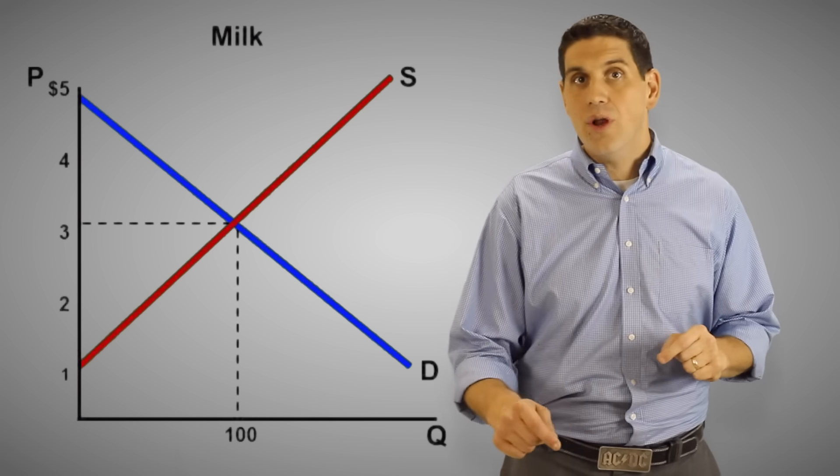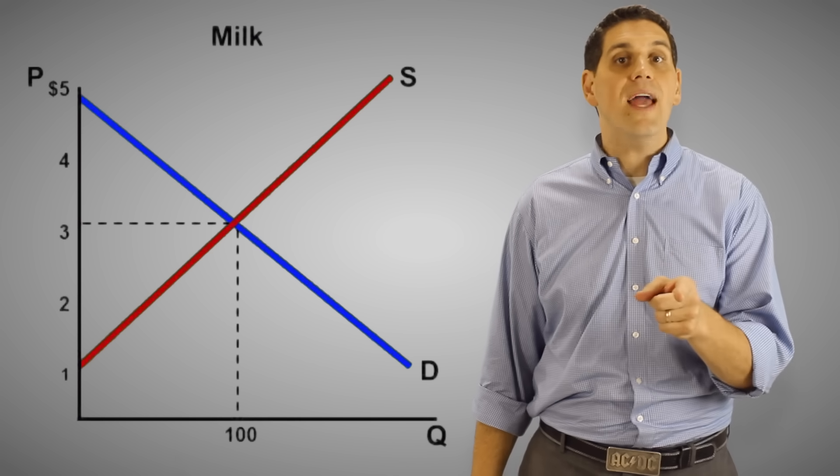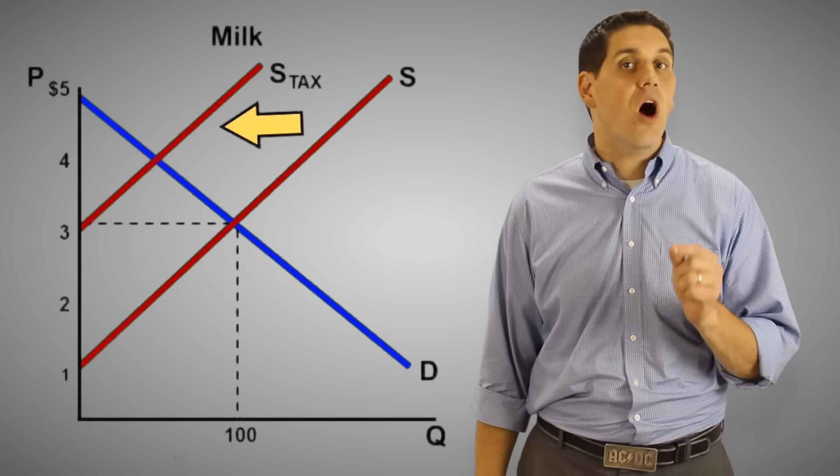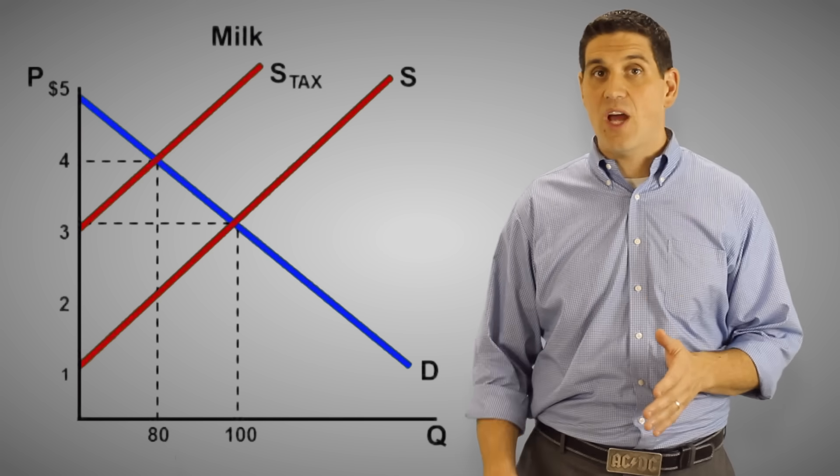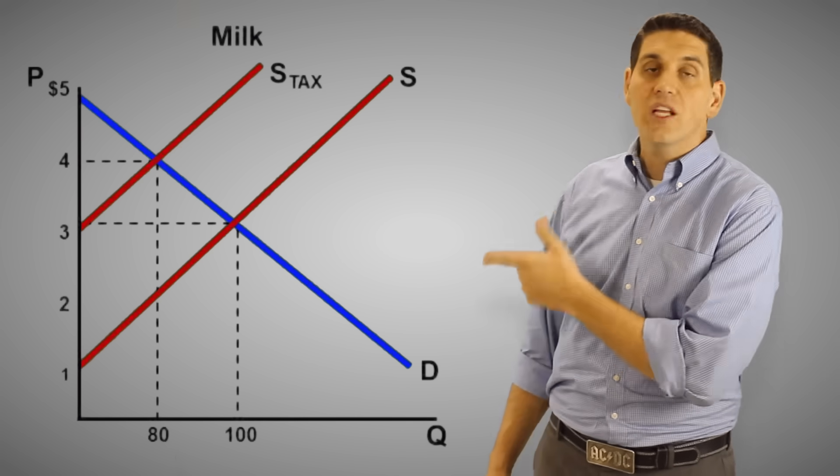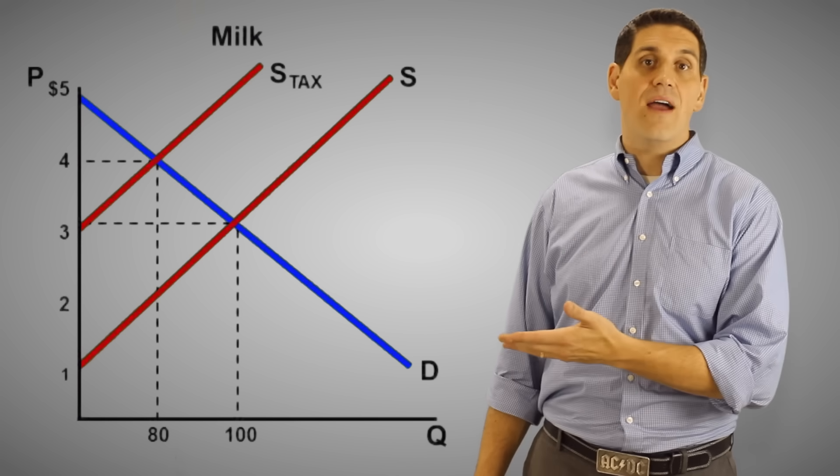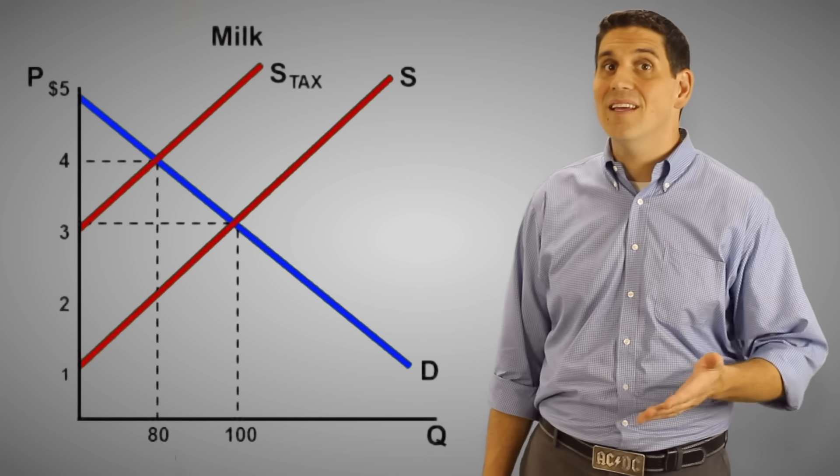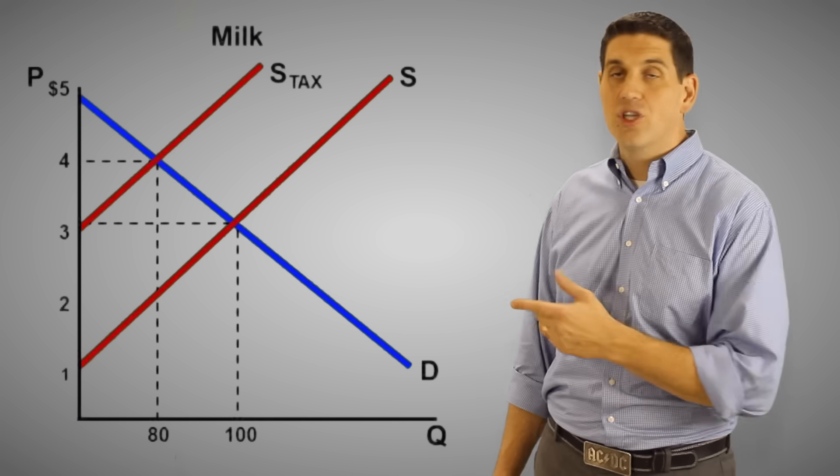We've got the supply and demand for milk and the equilibrium is right here at $3. If the government put a per unit excise tax on milk of $2 per unit, that would cause the supply curve to shift to the left. The price that consumers pay is now $4. But I want you to notice the price didn't go up to $5. It was a $2 tax and the price before was $3, but the new price isn't $5. That's because the consumers and the producers pay a portion of this tax.